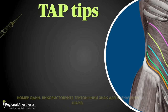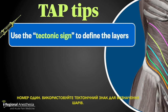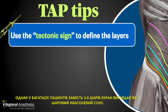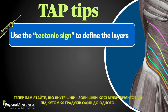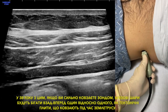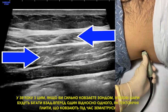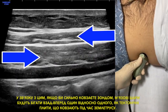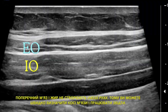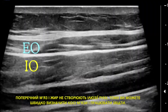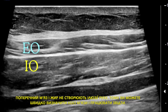And here are some TAP tips. Number one: use the tectonic sign to define the layers. In a slim patient, it's often not hard to identify the three muscle layers on the screen. In many patients, however, instead of three layers the screen looks like a seven-layer bean dip. Remember that the internal and external oblique muscles are oriented at 90 degrees to each other. Because of that, if you fan your probe in a cephalocaudal fashion, the muscle layers will appear to run back and forth with respect to each other, like tectonic plates sliding during an earthquake. The transversus muscle and the fat don't tend to give the illusion of motion, so you can quickly identify the obliques and work from there.